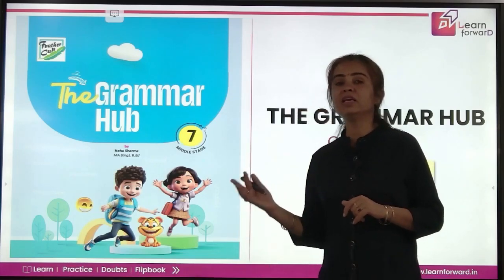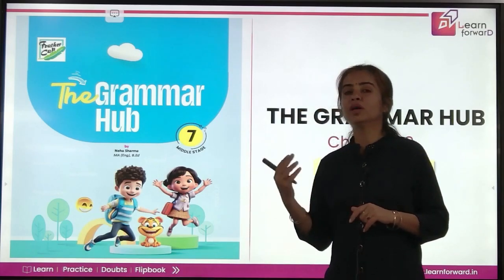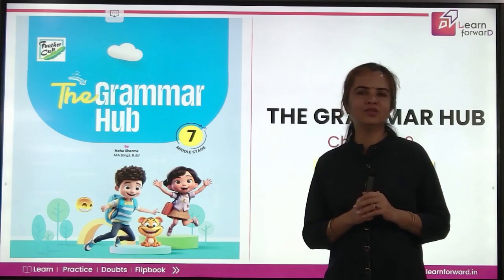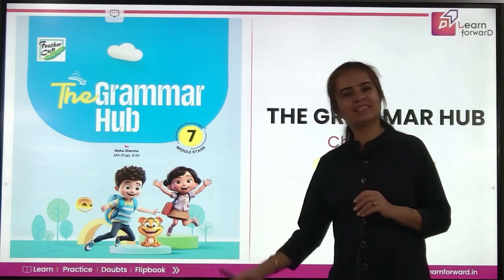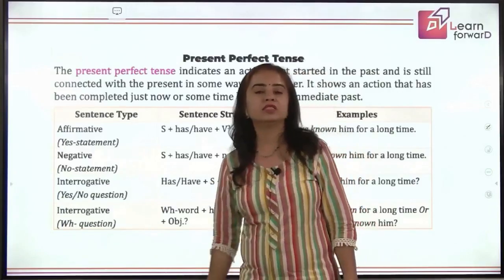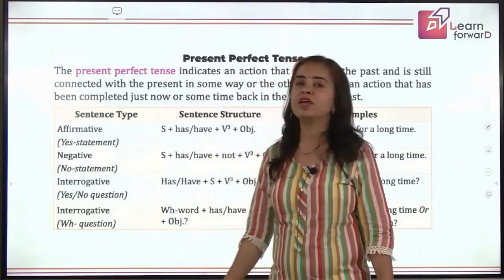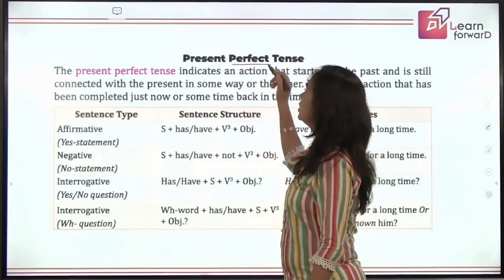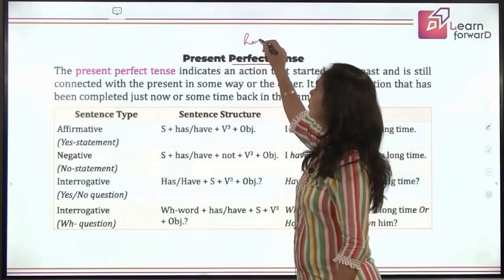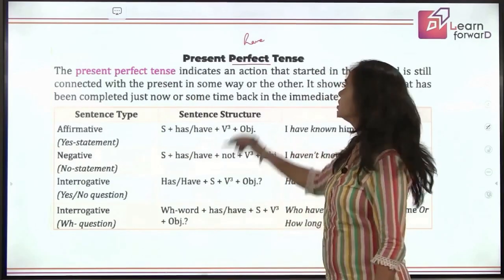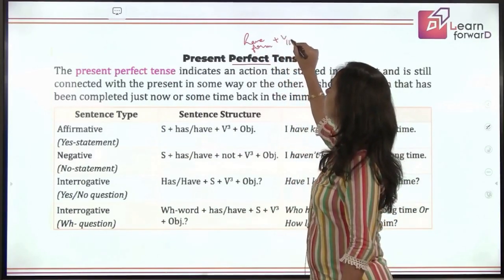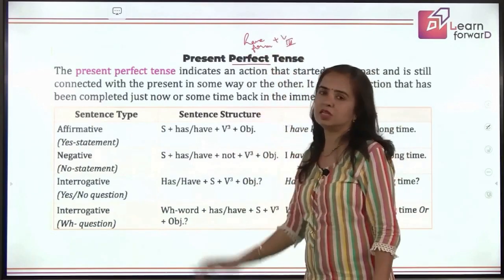We have already learned about tenses — what is present tense and how the verb is formed. Now we'll be doing present perfect tense. In present perfect tense, what you have to remember is whenever there is a perfect tense, we use some 'have' form — whether in present, past, or future — always with the third form of verb. That's the basic thing to remember.